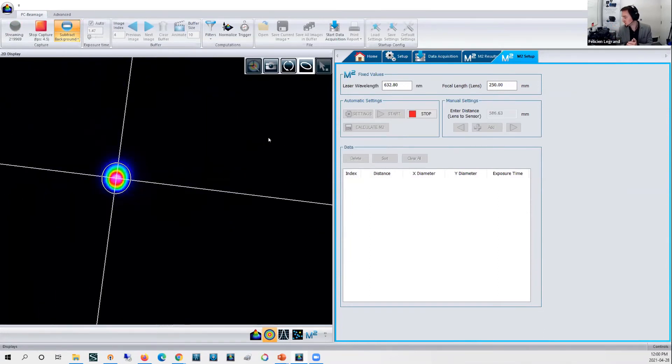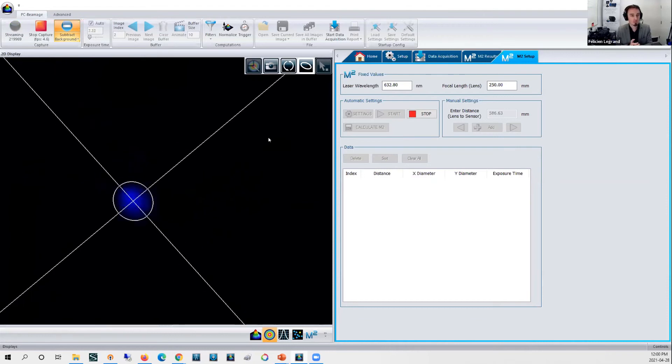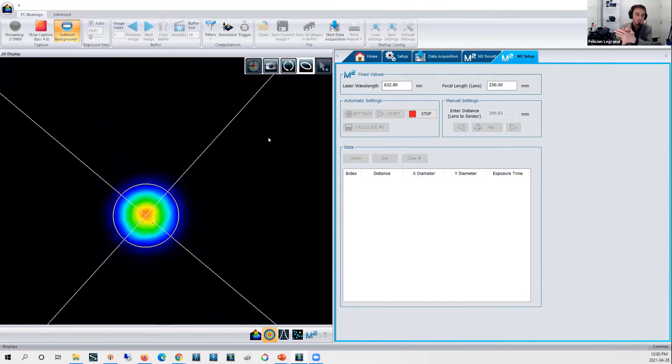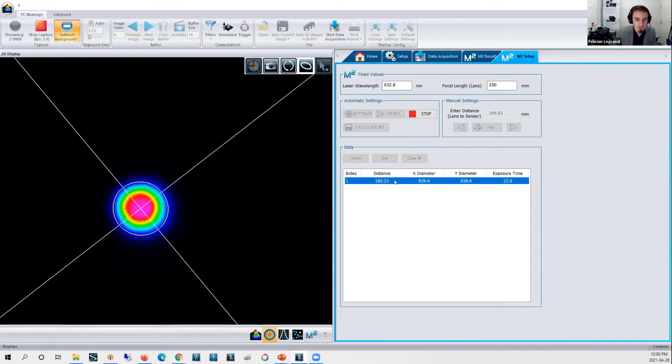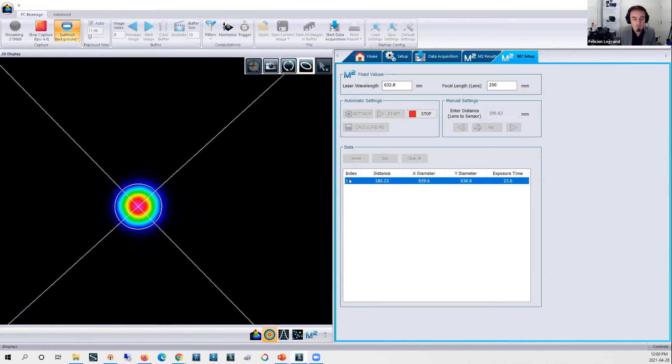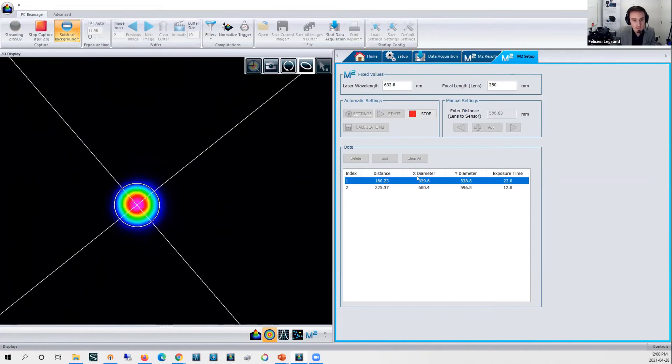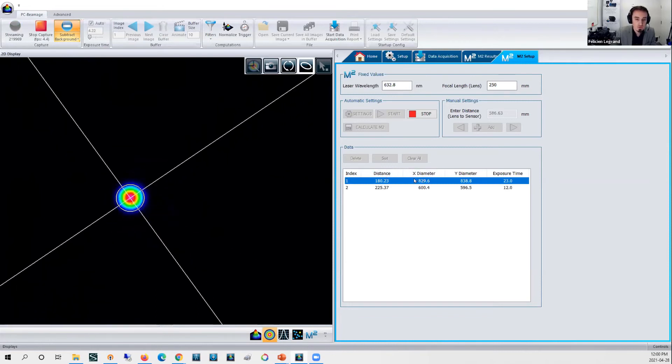Then you'll see the moving stage will go to the closest to the lens as possible and then start to measure the beam diameters. You will see the measurements displayed in this window here. So that's the index of the measurement, distance between the lens and the camera sensor, the X diameter measurement in micrometers, so the X and Y, and the exposure time.